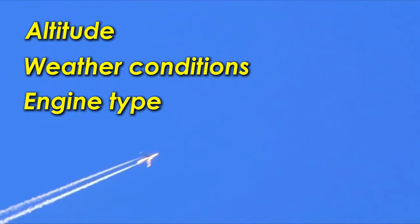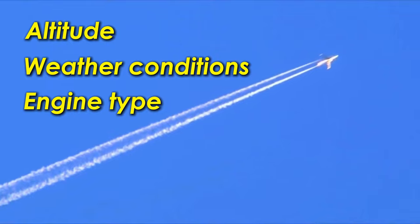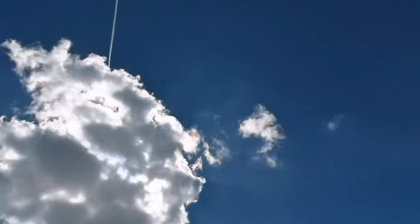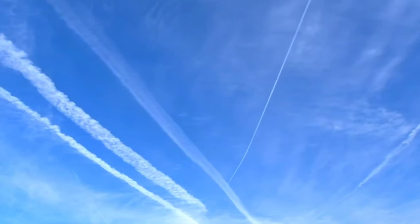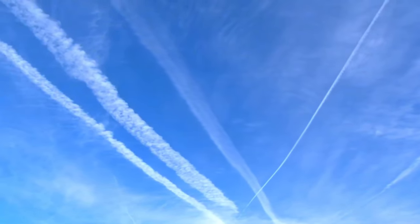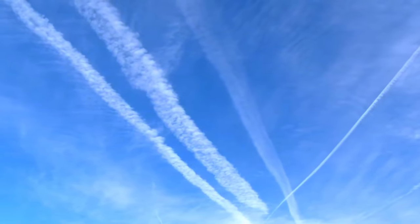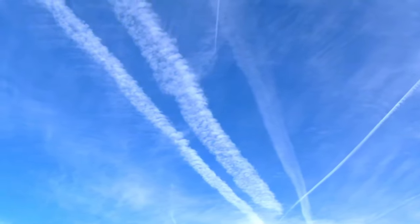Some people mistakenly believe that the white smoke emitted by airplanes is chemtrails. Not to be confused with contrails, the term chemtrails refers to the theory that airplanes intentionally leave behind chemicals in the sky. It's an age-old theory that has led to a myriad of conspiracy theories. However, there's no evidence that airplanes actually produce chemtrails.